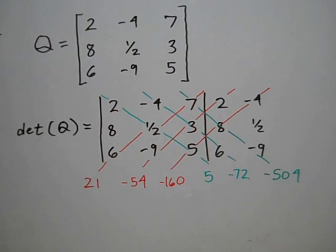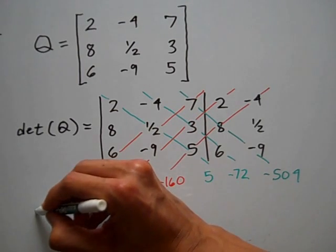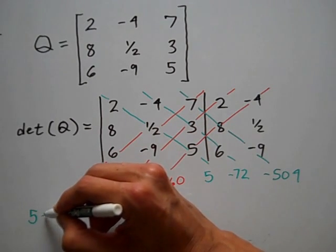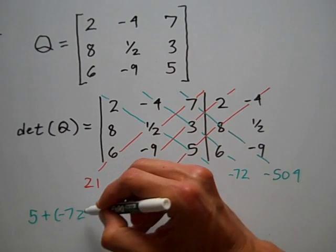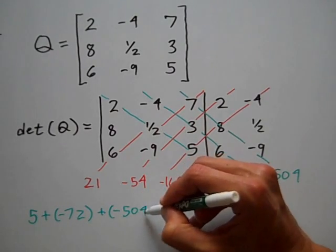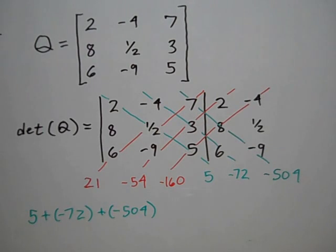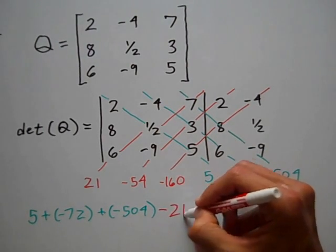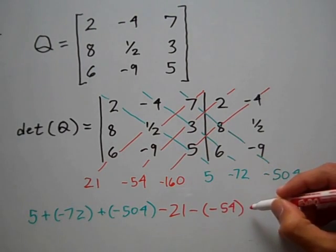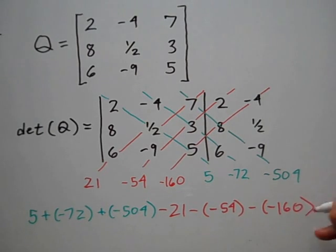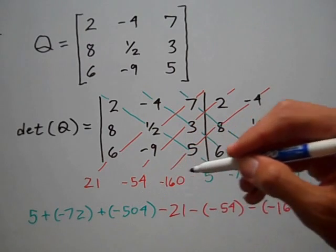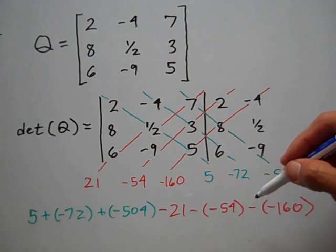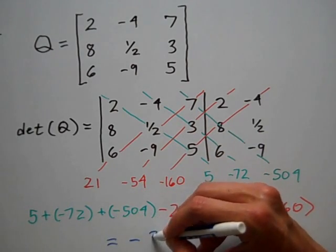So now those first three numbers that I obtained — those green numbers — I'm going to add those together. The determinant will be 5 plus negative 72 plus negative 504, minus the red values: 21 minus negative 54 minus negative 160. So 5 plus negative 72 plus negative 504 minus 21 minus negative 54 minus negative 160 turns out to be negative 378.